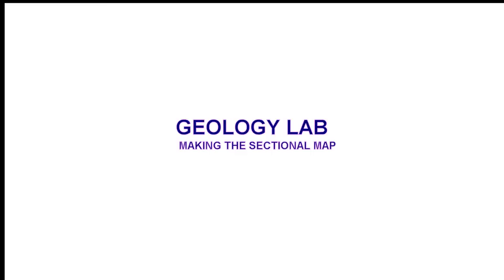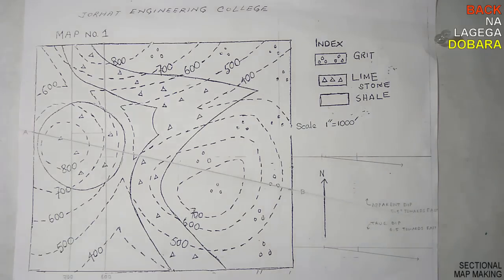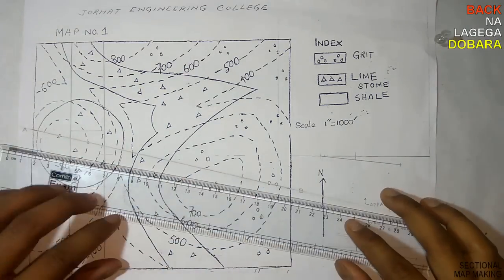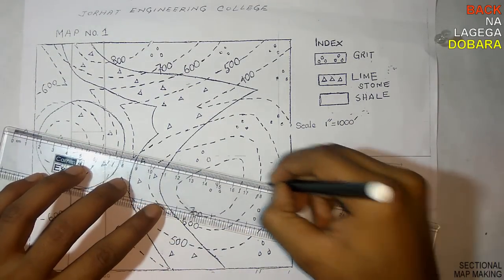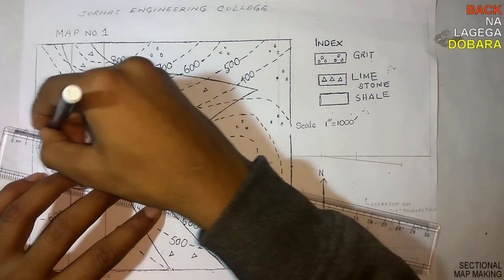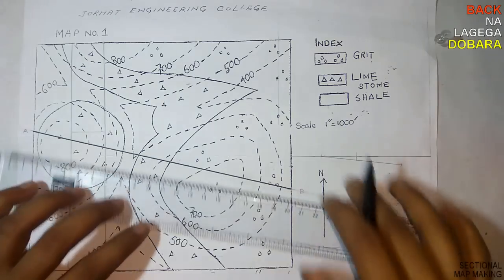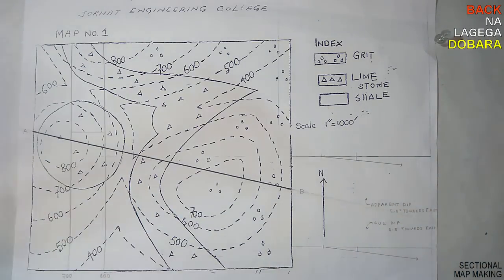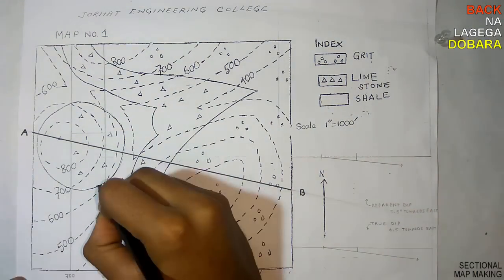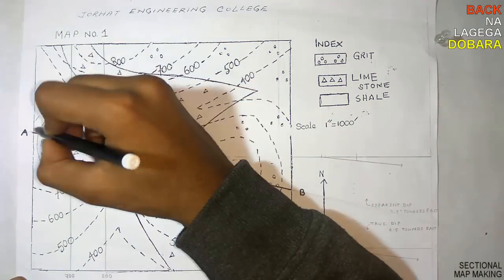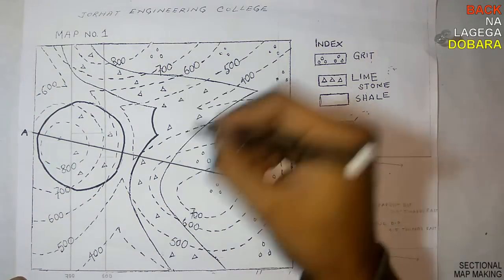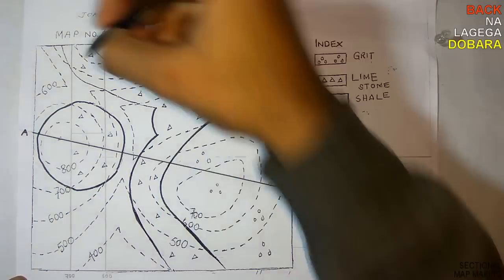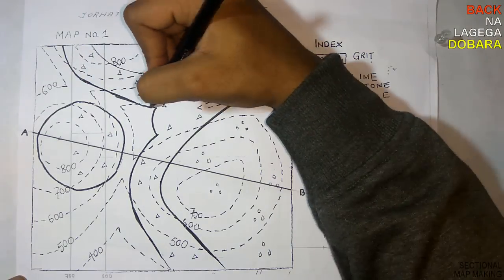In this video we will discuss how to draw the sectional map describing the sectional view of a rock structure. A straight line will be given to you along with the bedding planes. The black lines represent the bedding planes.